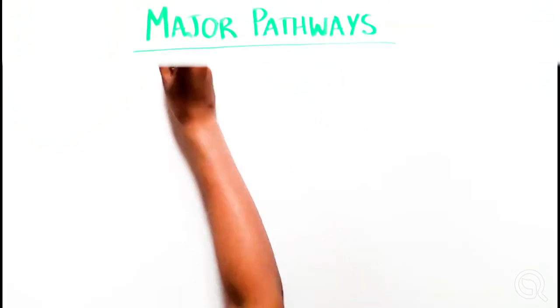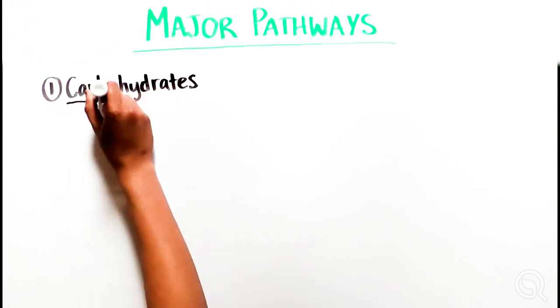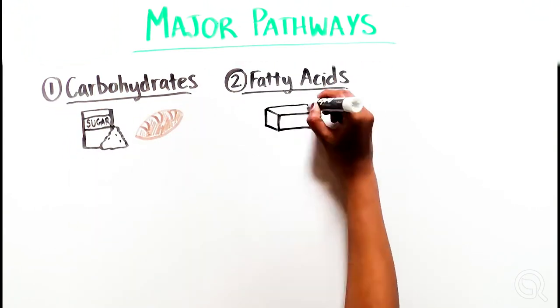The major metabolic pathways are those for carbohydrates, or sugars, fatty acids, or fats, and ketones.